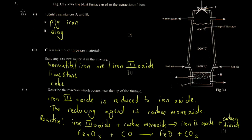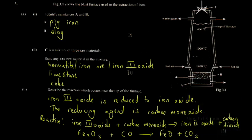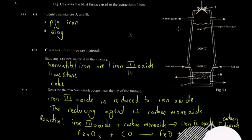On question three, part five, this is the blast furnace, used in the extraction of iron. Iron isn't found in raw form within the Earth's crust - it's found in compound form attached to impurities like sand. You also find it as iron oxide, so the furnace is used to remove the oxide part.